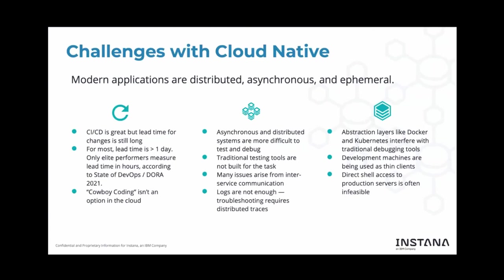We're trying to get the power back to developers. Modern applications are distributed, asynchronous, and ephemeral, and this creates a lot of challenges for debugging. We can't just log into a production server, get a shell, find the log for the process, and use that to debug anymore — it doesn't work when you have multi-instance microservice applications where what used to be a function call is now a network call to another service. We believe that shift-left observability means having these tools available in all environments, including CI and development environments. Abstraction layers like Docker and Kubernetes also interfere with the debugging tools we're used to.